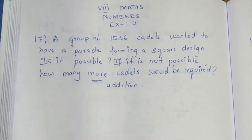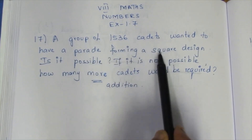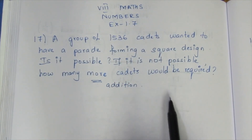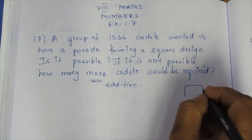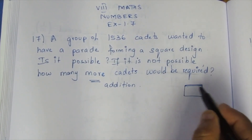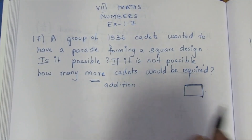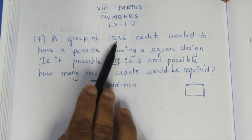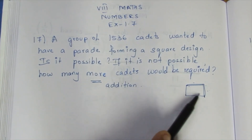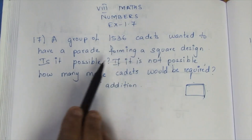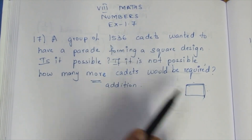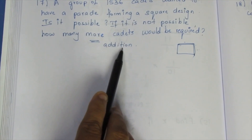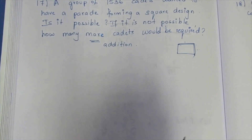To check if 1536 cadets can form a square design, we need to find the square root of 1536. A square design requires an equal number of places in rows and columns. We will find the square root, and if it is not a perfect square, we will use subtraction or addition to find the answer.